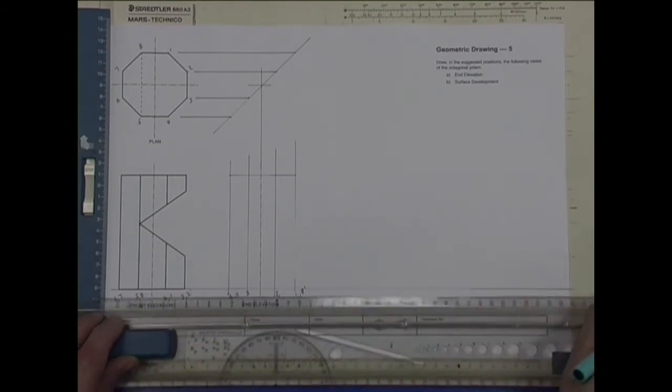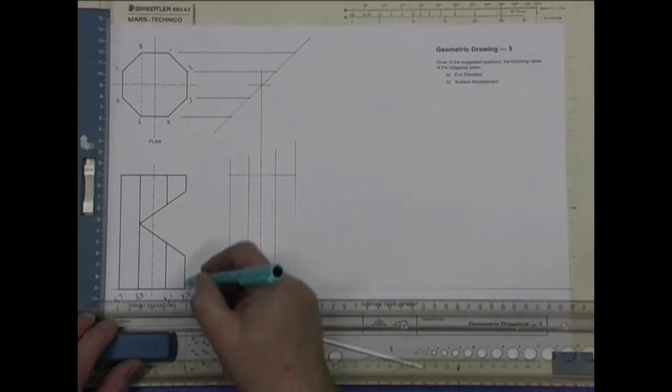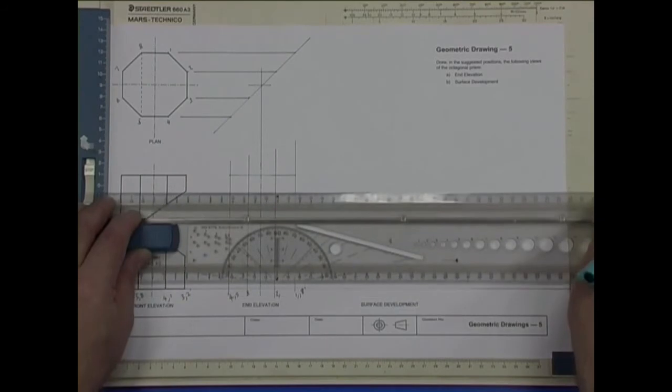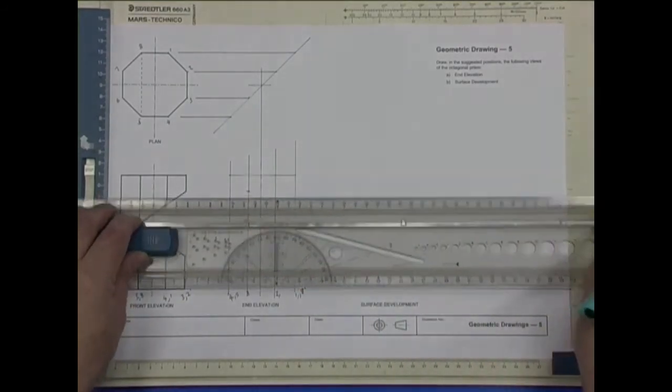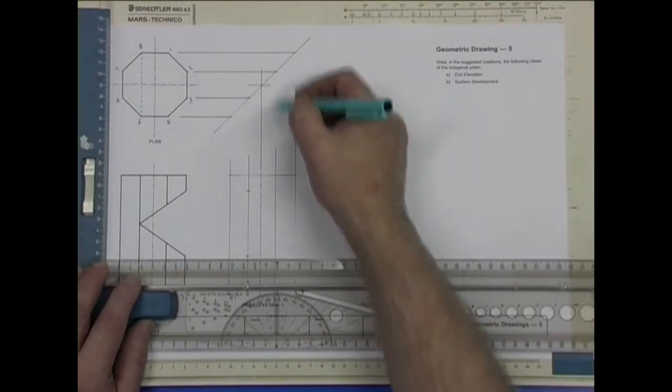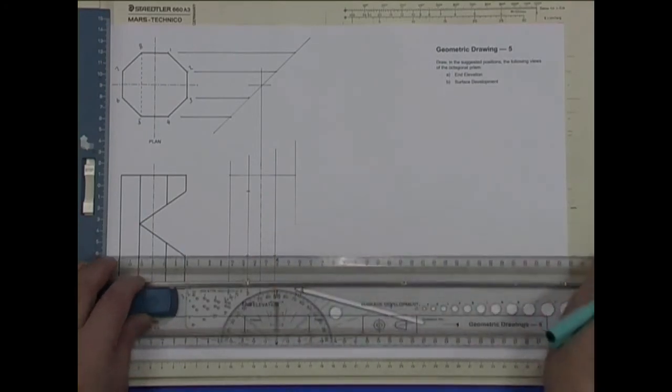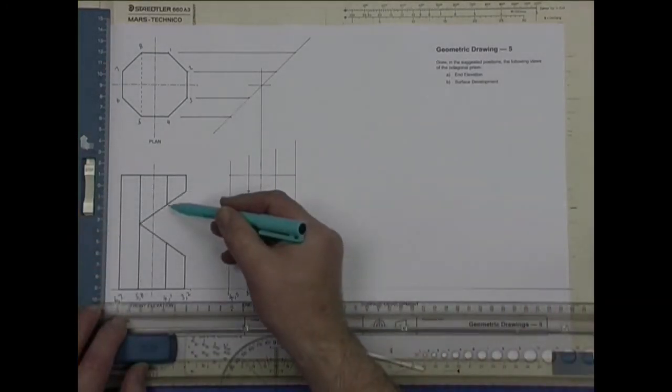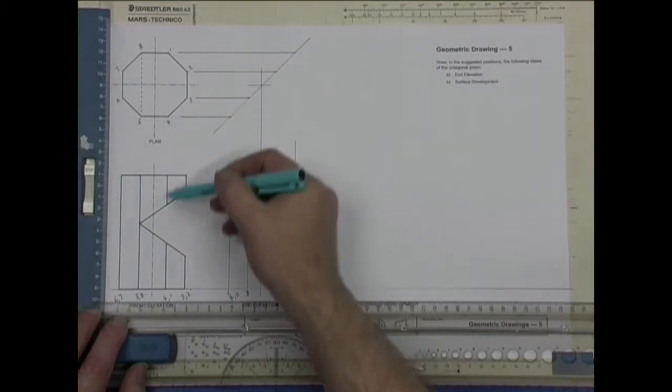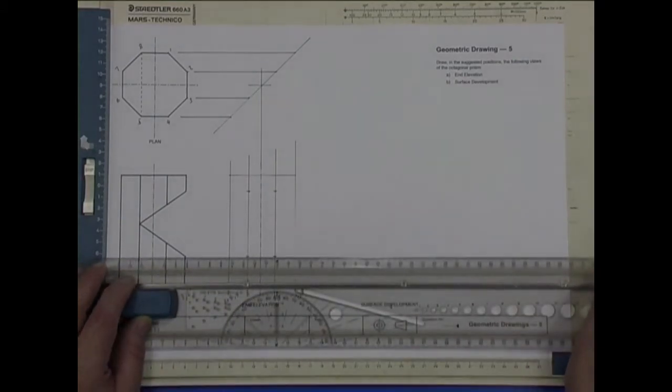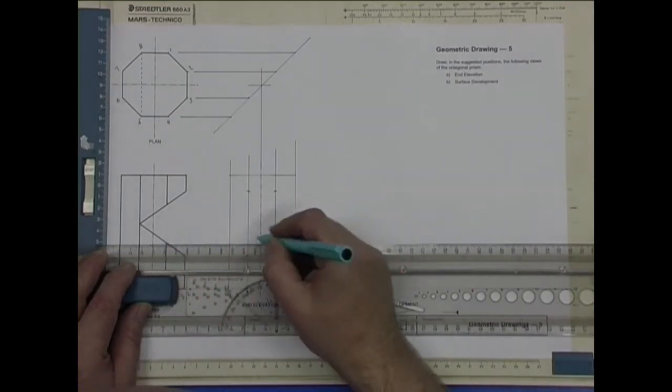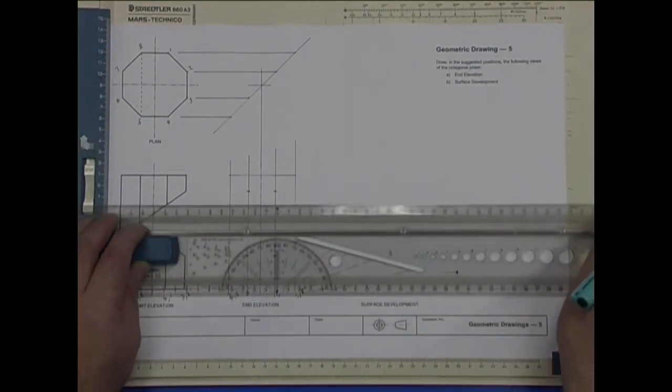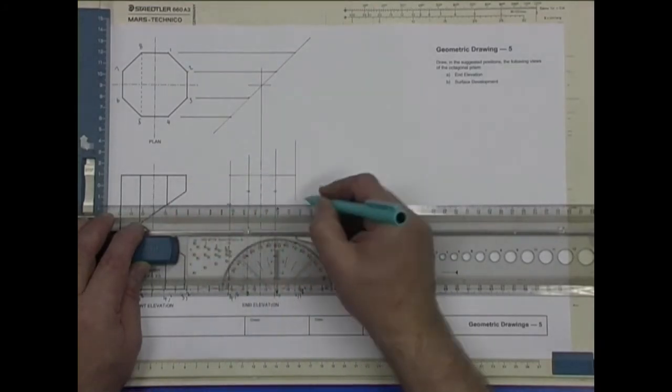I'm going to draw one line at a time. Line number 3, corner number three is cut at that point and at that point. Likewise, number two is cut at that point and at that point. This one, which is four and one, cut at that, four and one, cut at that height, four and one, and they're also cut at that height, four and one.